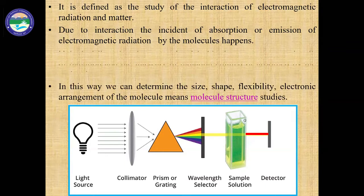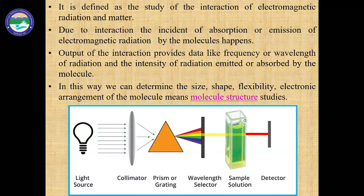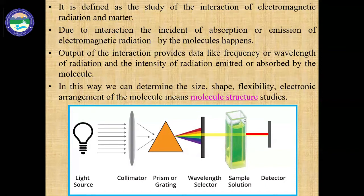When this phenomenon happens, the output of the interaction will give us some data. In this type of interaction, the data will be in terms of frequency, or in terms of wavelength, and sometimes in terms of intensity. So after the interaction of that matter and the light, we will get some information in the form of frequency, wavelength, or the change in intensity of the light. The two phenomena which happen are: one is absorption, another one is emission by that material.